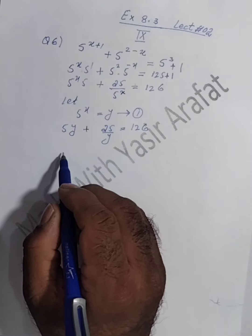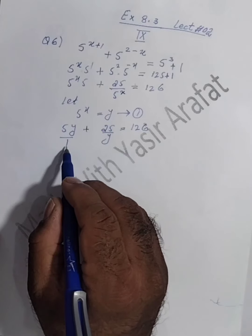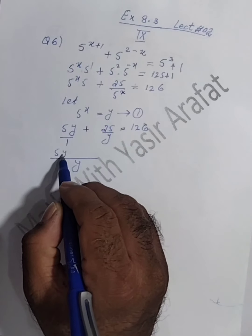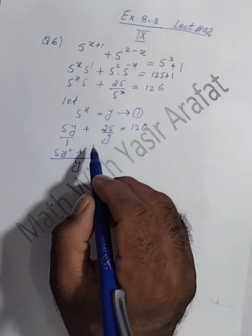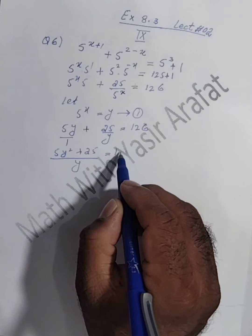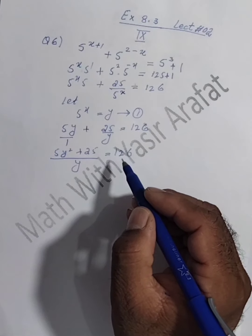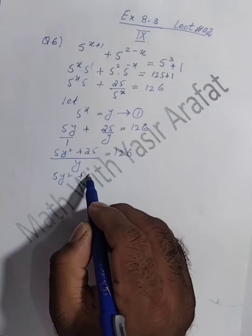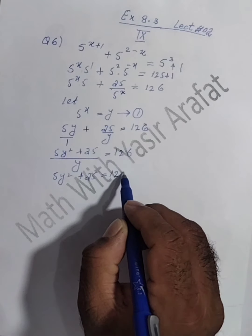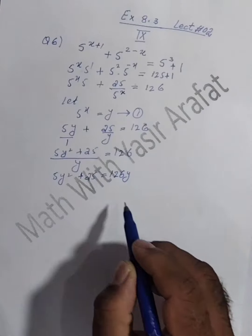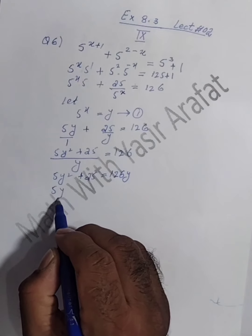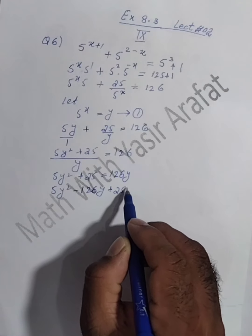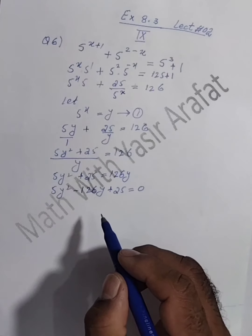There is a 1 here where there is no number. Take out the LCM: y multiplied by 5y gives 5y squared. Taking out the ordinary LCM: 25 ones are 25. Shifting y to the right-hand side, we get 25 equal to 126y.